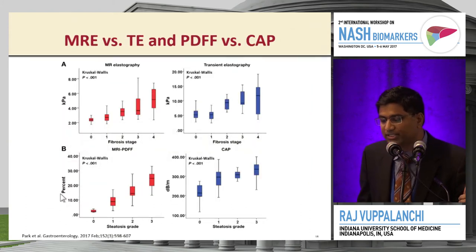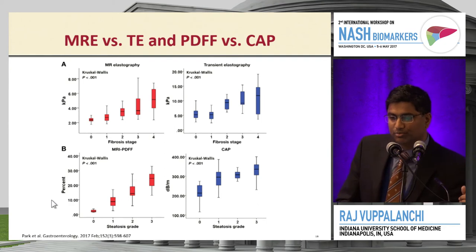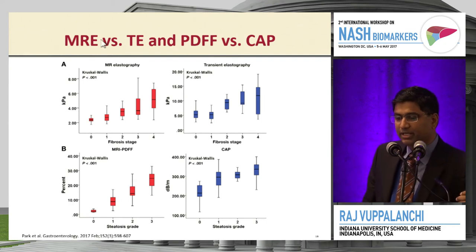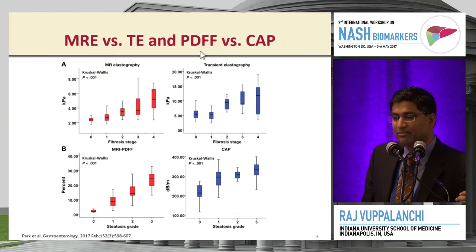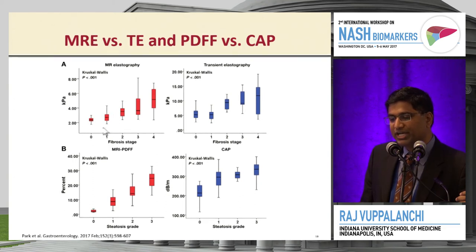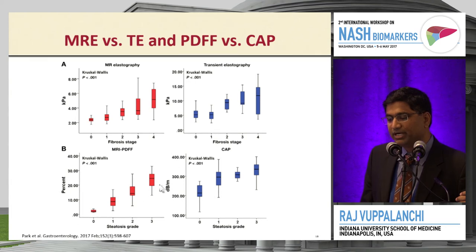A recent study from Rohit's group compared MRE and transient elastography for LSM, and PDFF versus CAP. MRE showed better differentiation in early fibrosis, whereas transient elastography did not fare as well in that range. There was good gradation seen with both PDFF and CAP.